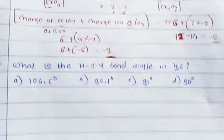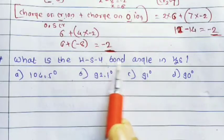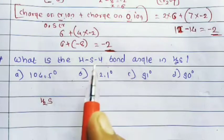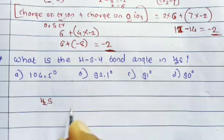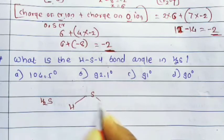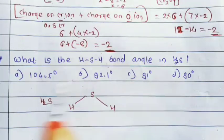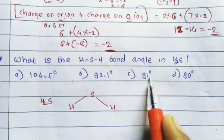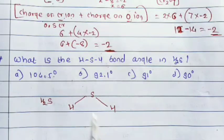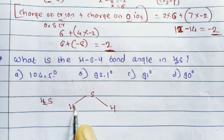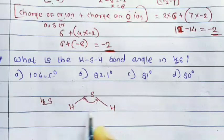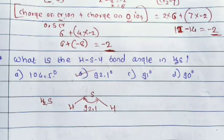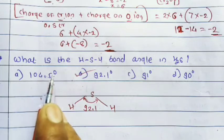Next question: what is the H-S-H bond angle in H₂S? Options: 104.5°, 92.1°, 91°, or 90°. The bond angle between hydrogen, sulfur, and hydrogen in H₂S is 92.1°. So the answer is 92.1 degrees.